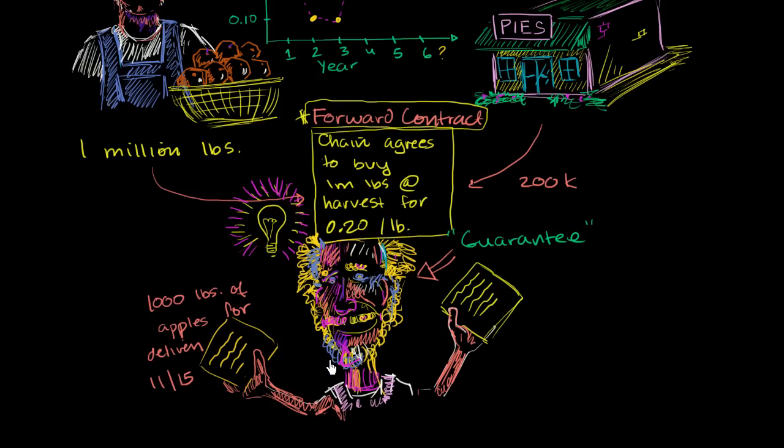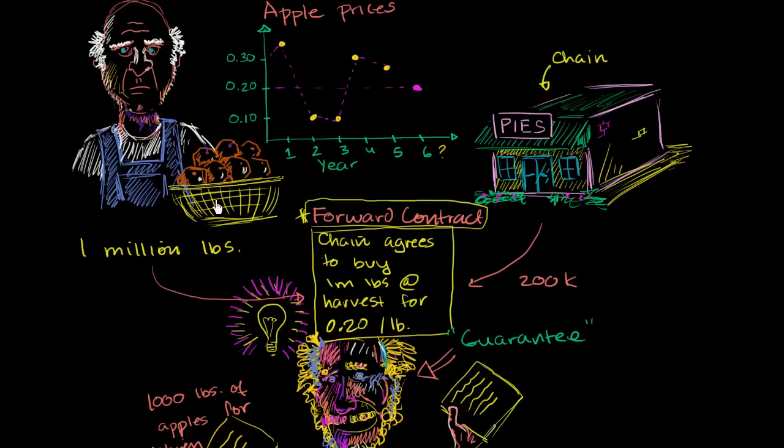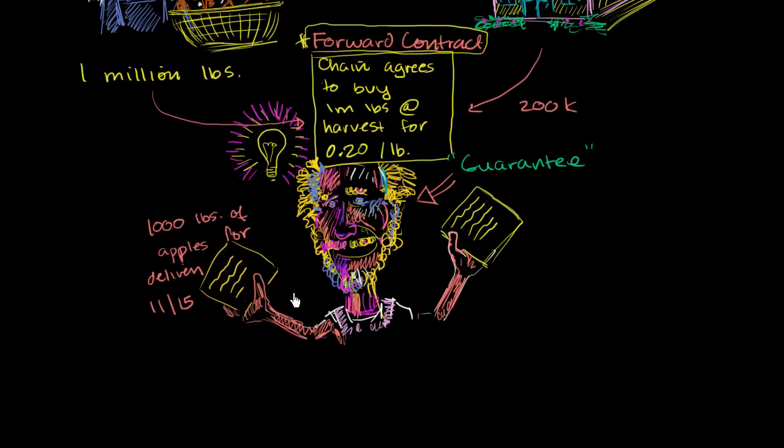So all of a sudden, what happens is that now, these guys don't have to do a one-off contract. They don't have to do this one-off forward contract. There are these standardized contracts that this exchange can now trade.